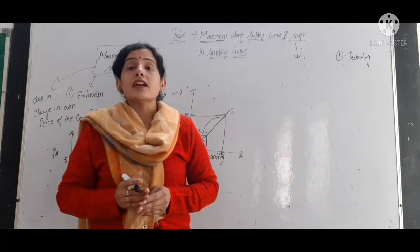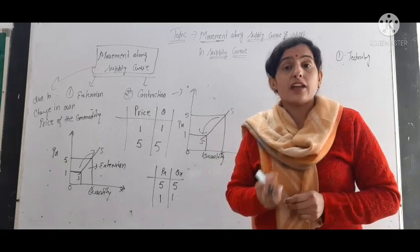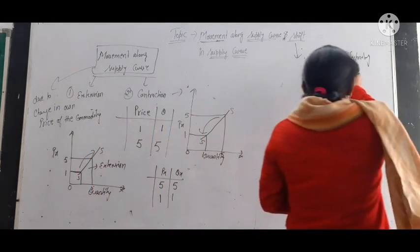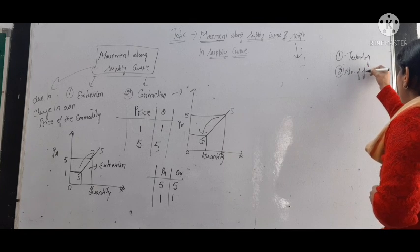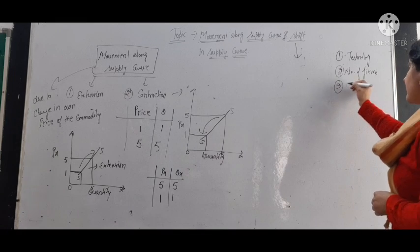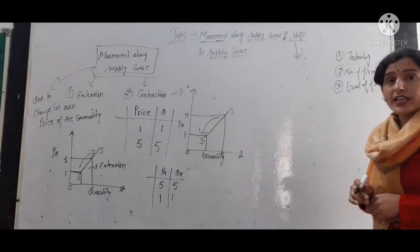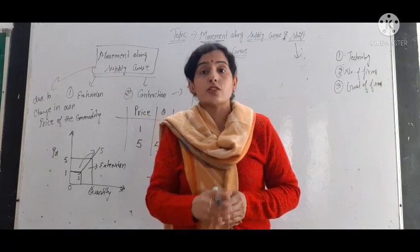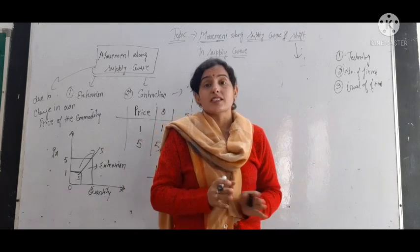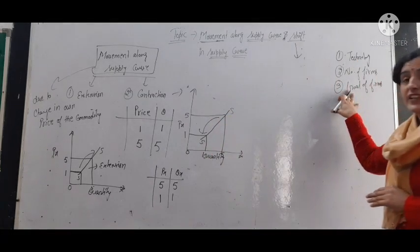Other factors include technology — if the producer replaces outdated technology with modern technology, the cost of production decreases, and at the same price the producer supplies more quantity. Second, if the number of firms in the market increases, then obviously supply will be more at the same price. Third, the goal of the firm — when the goal changes from profit-oriented to sales-oriented, at the same price the firm will supply more goods.